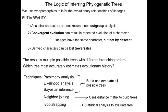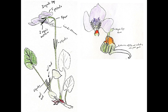A variety of logic and statistical techniques are used to find confidence in one of the many possible trees. We do not cover these techniques in BOT 220, but here they are: parsimony analysis, likelihood analysis, Bayesian analysis, neighbor joining, and bootstrapping.